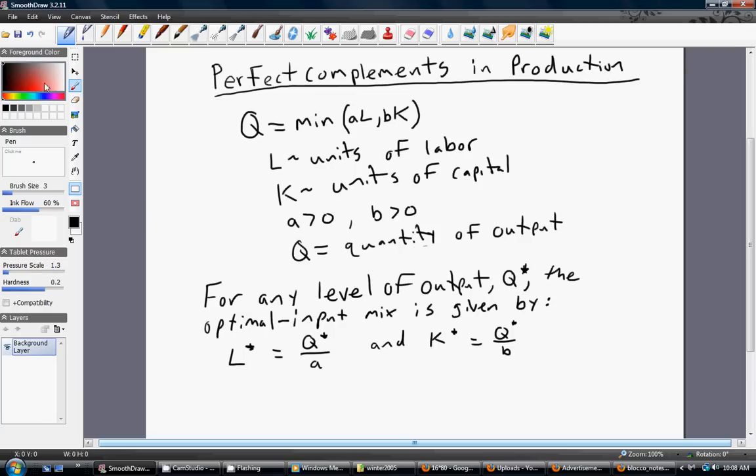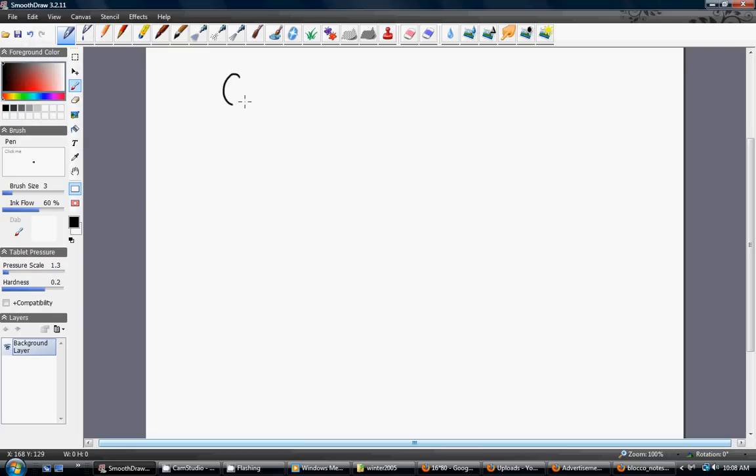Let's do an example. Here, the firm's output is given by the minimum of one-third L or 2K. And maybe in this example, we're interested in the firm producing 100 units of output. So we want to find how many units of labor should this firm use and how many units of capital.